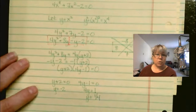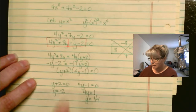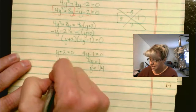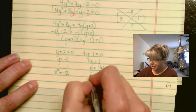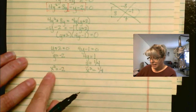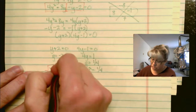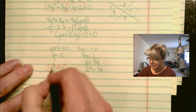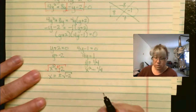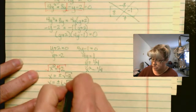But in the very beginning we started off with x's, not y's. So let's substitute back in — wherever we see a y, we'll put an x squared. That means x squared equals negative 2, and x squared equals 1/4. Taking the square root of both sides of x squared equals negative 2, we get x equals plus or minus the square root of negative 2, which we can rewrite as x equals plus or minus i times the square root of 2.